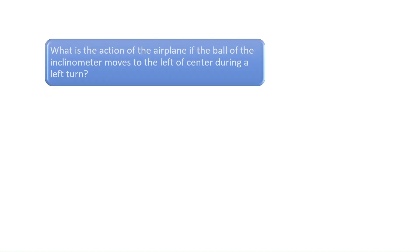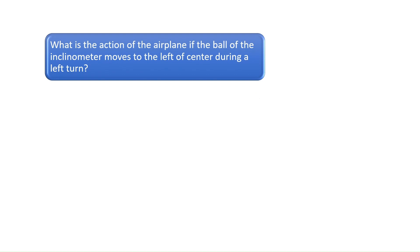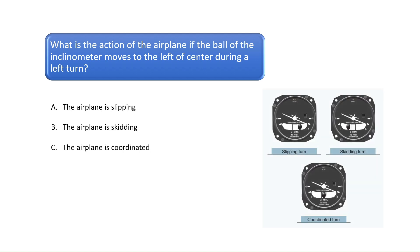Question 8. What is the action of the airplane if the ball of the inclinometer moves to the left of center during a left turn? As you can see from the image on the right, which can be found in Chapter 8 of the Pilot's Handbook of Aeronautical Knowledge, if the ball of the inclinometer is moving in the same direction as the bank of the aircraft, then the aircraft is in a slipping turn.